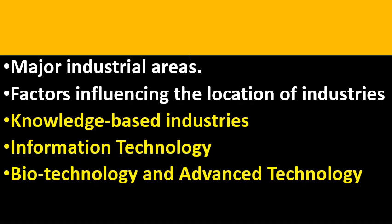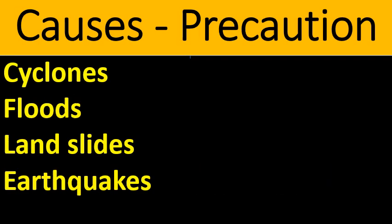Major industrial areas in India and factors influencing the location of industry. The developments achieved through knowledge-based industries, information technology, and biotechnology. Causes for cyclones, floods, landslides, and earthquakes, and the precautionary measures to prevent them — to be studied.